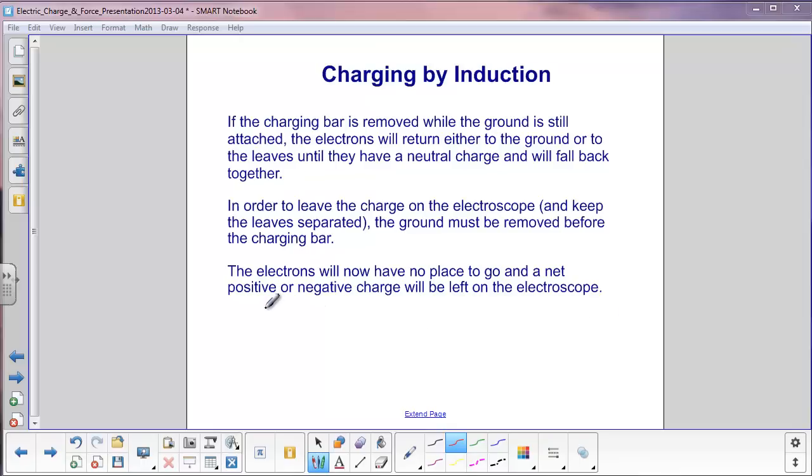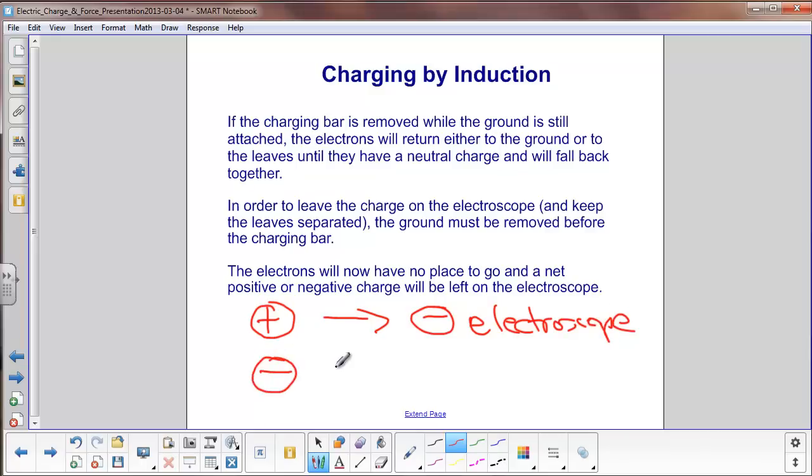Now in this case, if you use a positive rod in induction, what you get at the end is a negatively charged electroscope. If you have a negative rod, your end result will be a positively charged electroscope. This is opposite from charging by conduction where the electroscope comes up with the same charge as the charging rod. In induction, it's the opposite.